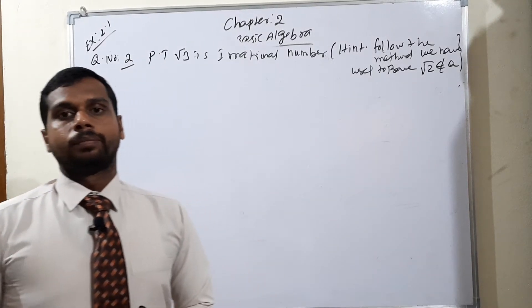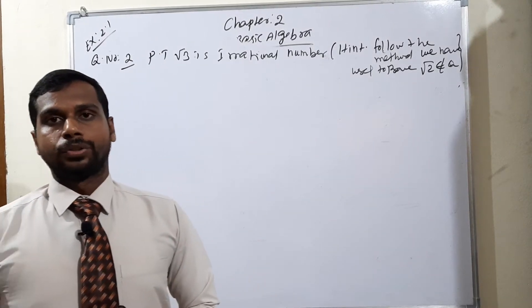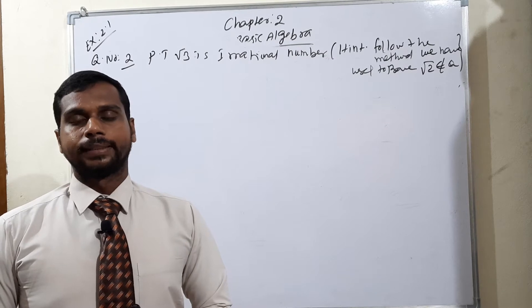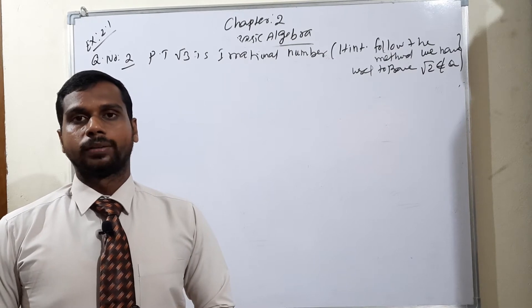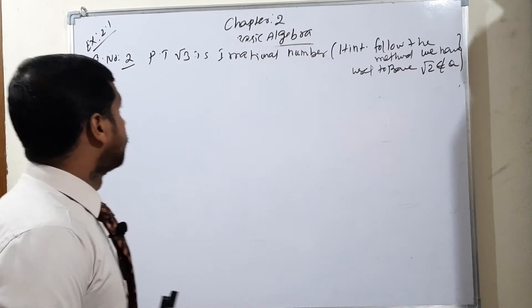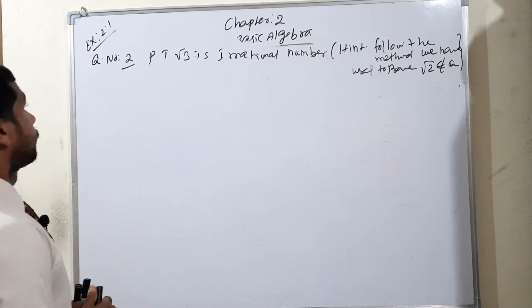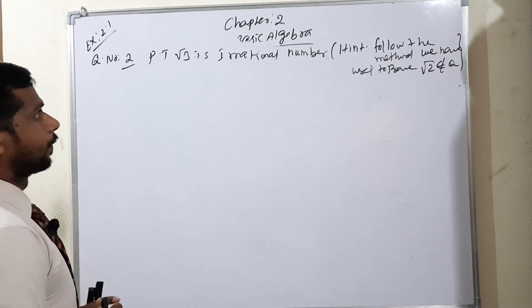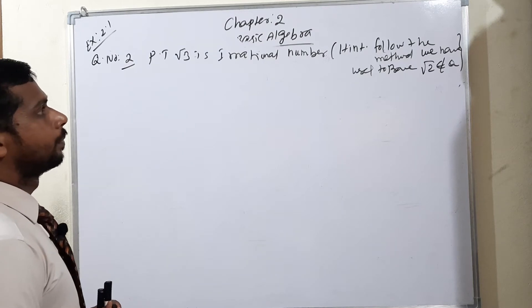Good evening everyone. Welcome to Tenimax. I am moving to exercise 2.1, question number two. The question is: prove that root 3 is an irrational number.